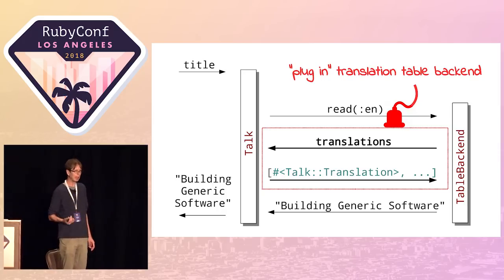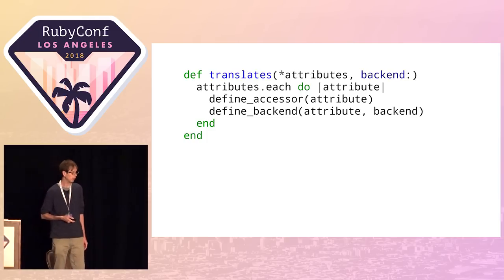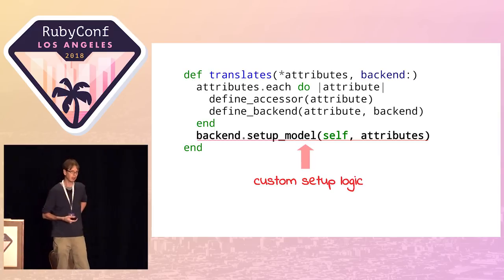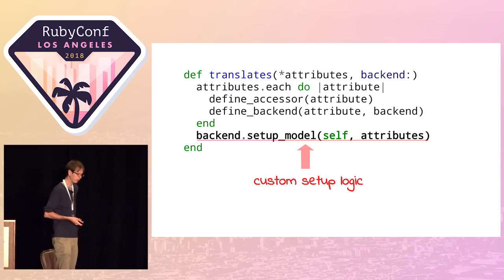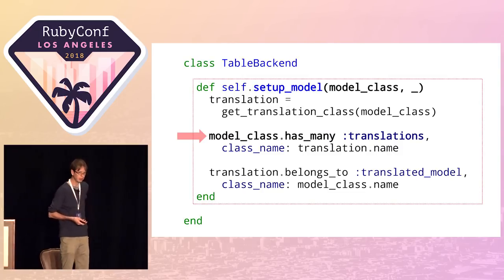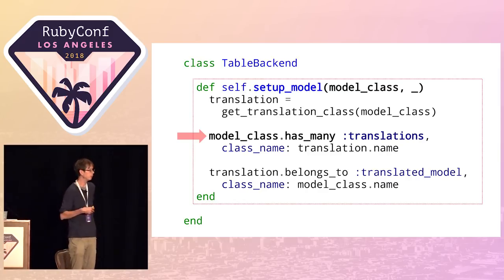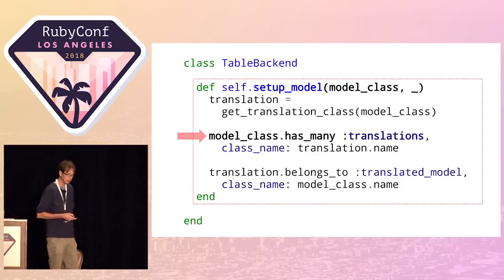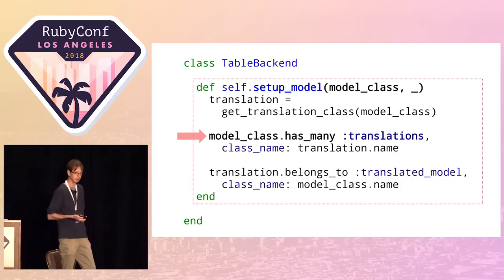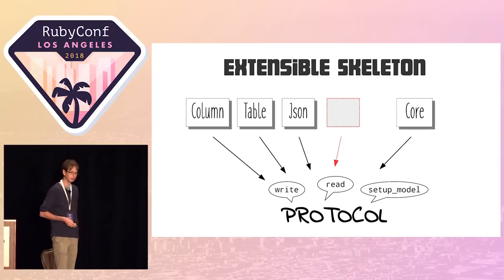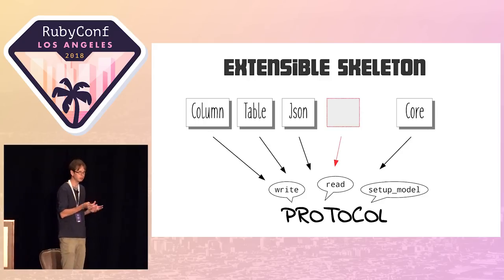We need to add something to this method. We can add logic where we take that backend class and call a class method `setup_model`. This is an addition to our protocol. We pass `self` — which is now the class, like `Talk` — and the attributes. This gives the backend class a chance to do extra setup on the model if it needs to. For the column backend, this is just a no-op. But for the table backend, it can call `has_many :translations` with a class name, creating the association so that when it gets a `read` call, it knows the talk will have translations. As it turns out, this is enough to support all the different translation backends — column, table, JSON, pretty much anything. You've isolated the core logic of getting and setting.